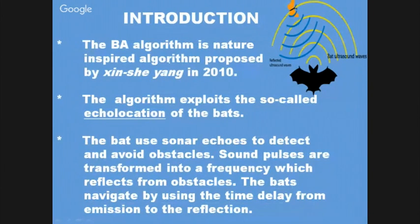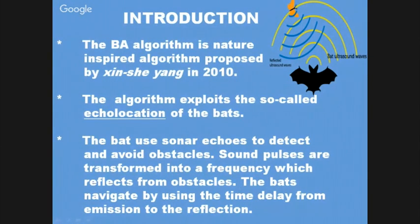We all know what a bat is, and the common belief is that it can't see at night. But the reality is the other side of the coin — bats have much sharper senses compared to any other living beings on Earth, even including human beings. That sensing is based on echolocation.